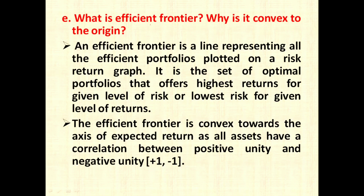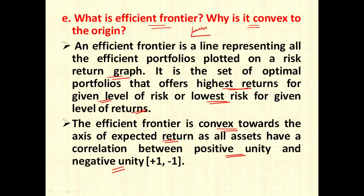The next question is: what is the efficient frontier and why is it convex to the origin? An efficient frontier is a line representing all the efficient portfolios plotted on a risk-return graph. It is a set of optimum portfolios that offers the highest returns for a given level of risk, or the lowest risk for a given level of returns. The efficient frontier is convex towards the axis of expected return because all assets have correlation between plus 1 and minus 1, and because of this it is convex to the origin.